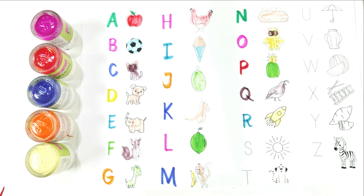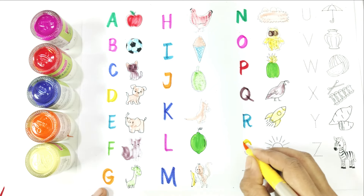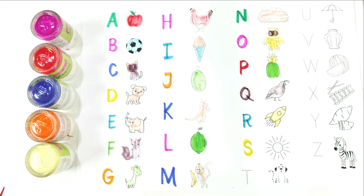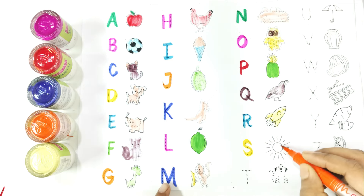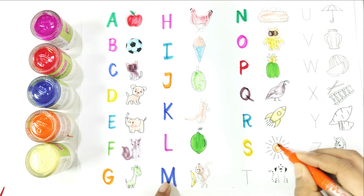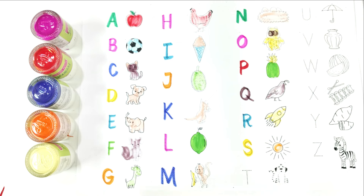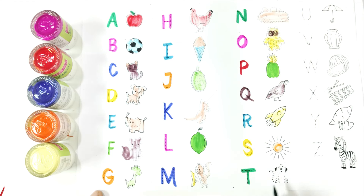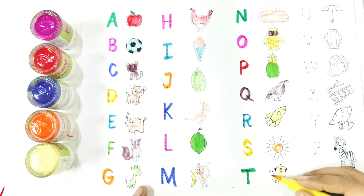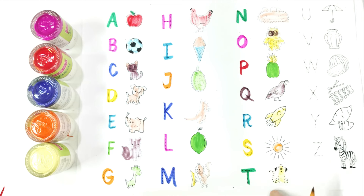Write with me. S — S is for sun. Again, say with me: S is for sun. Write with me. T — T is for tiger. Again, say with me: T is for tiger.